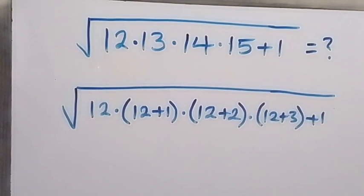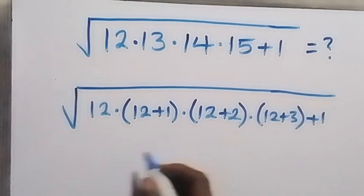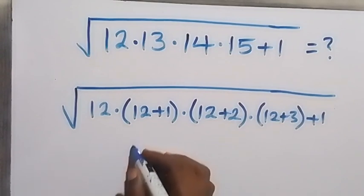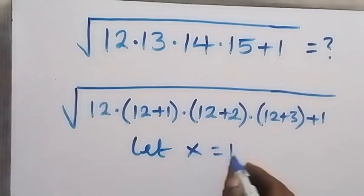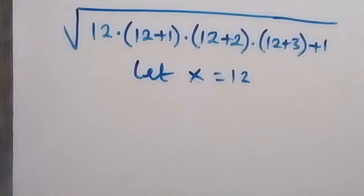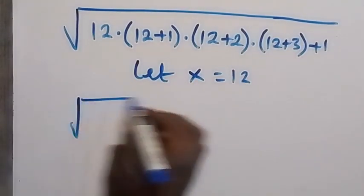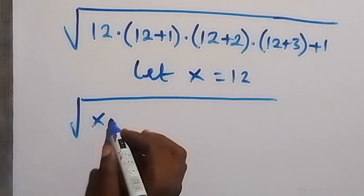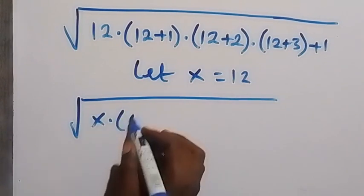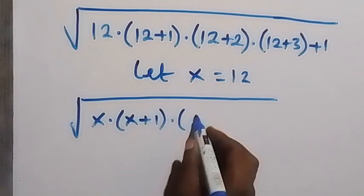From here we have this written again. Let's use a letter to represent 12 — let x be equal to 12 — and we write this again. This becomes the square root of x multiplied by x plus 1, then multiplied by x plus 2.